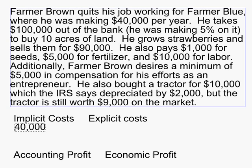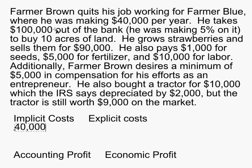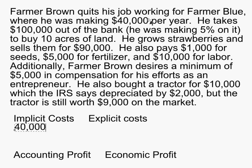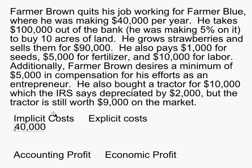He takes a hundred thousand dollars out of the bank. That's not really a cost because he's buying land with it — we'd have to assume he could sell the land and get that money back. But what is a cost is the five percent interest he's not going to be getting anymore. The five percent he could have made on the hundred thousand dollars this year — that's five thousand — is another implicit cost.